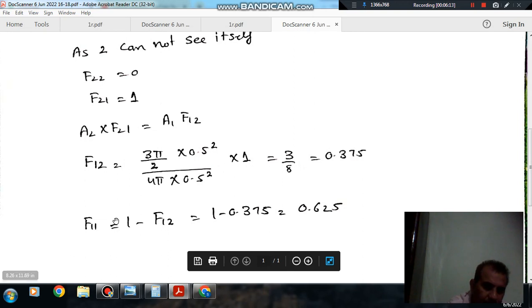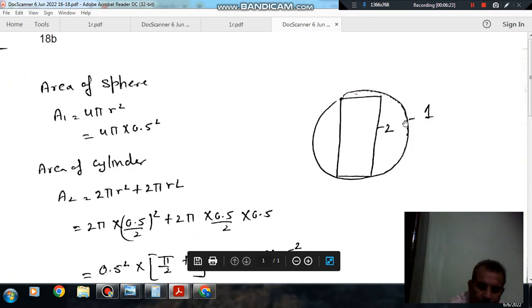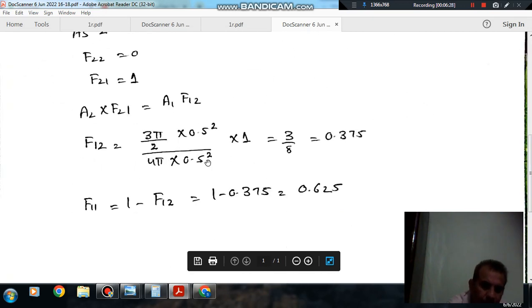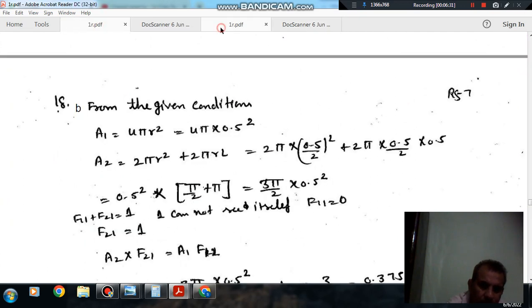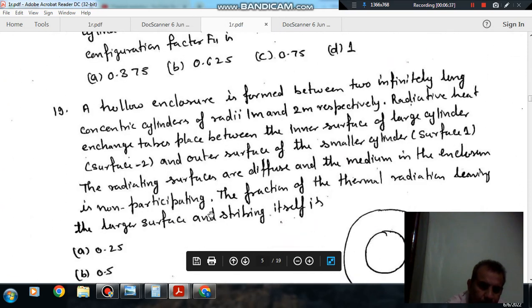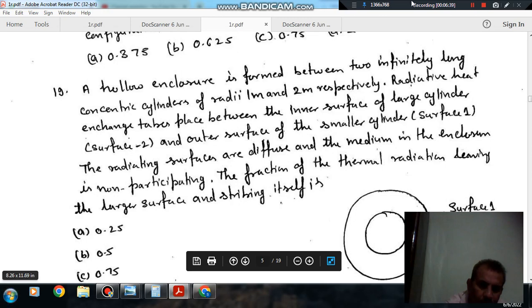F11 plus F12 equals 1. Now we have found out F12, that is 0.75. So F11 will be 1 minus F12. So F11 is 1 minus 0.75, that is 0.25. So the answer is 0.625, option B.